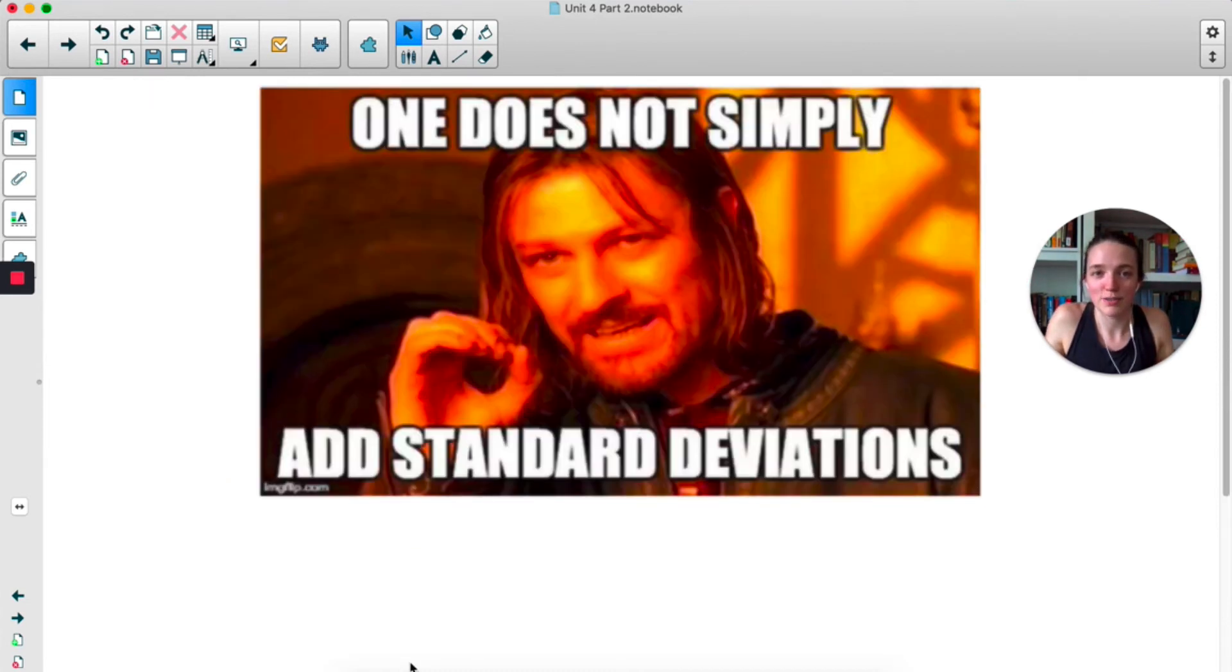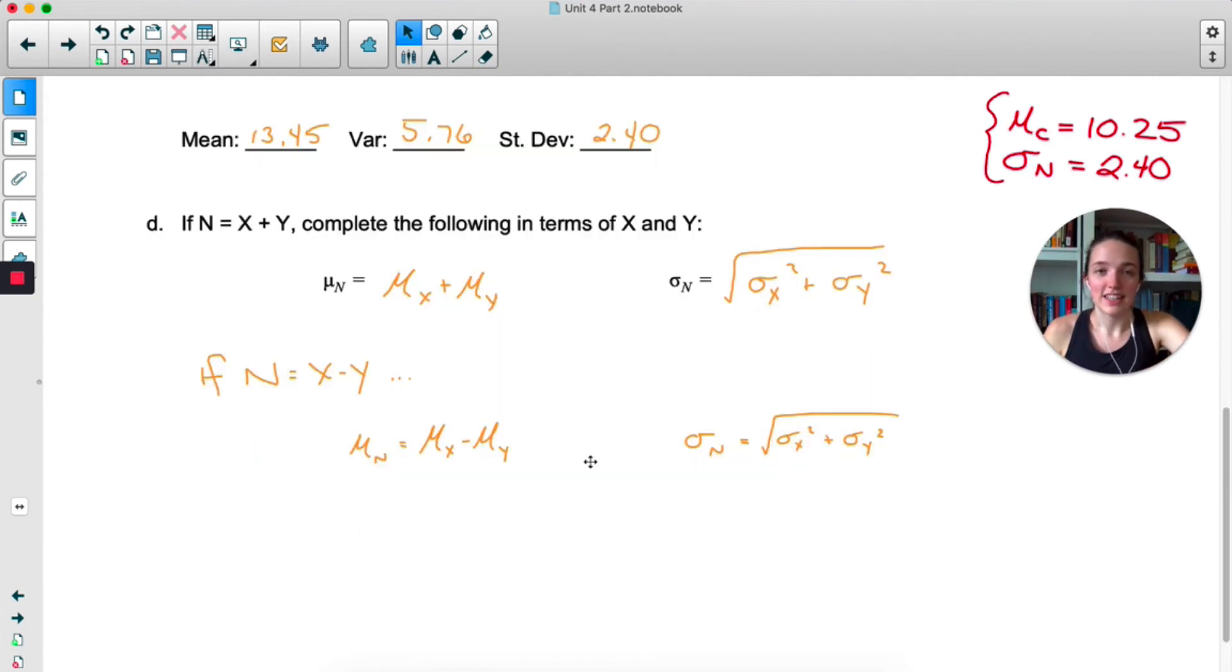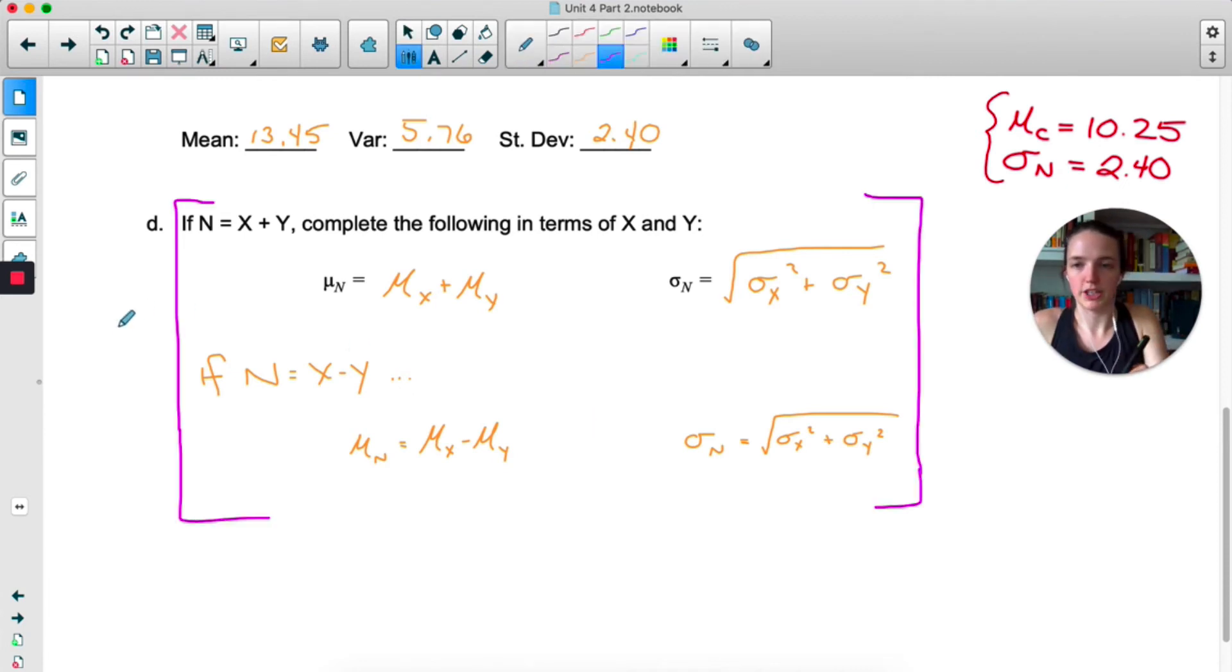Even though we're subtracting the two variables, we're still adding together the two variances and then square rooting to get the standard deviation. So I'm just going to put this on the screen again. One does not simply add standard deviations. Always, always add the variances and then take the square root. Even if you are subtracting X and Y. Still add the variances and take the square root. So one more big giant star or exclamation point or smiley face or whatever. This is how you combine two variables.